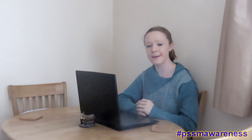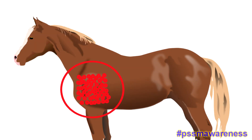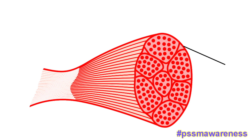Now let's show you what part of the muscle PSSM 1 actually affects. Here we have a drawing of a horse's shoulder muscle, which we have circled. You'll notice in this drawing there are lots and lots of tiny circles — this isn't because we are trying to draw an Appaloosa. A horse's muscles are made up of hundreds of thousands of tiny tubular structures called muscle fibres, which is what these circles are. In this next image we have a close-up of one of these circles — a drawing of a single muscle fibre. In horses with PSSM 1, the extra glycogen is predominantly stored around the sarcolemma, which is here around the edge of the muscle fibre.